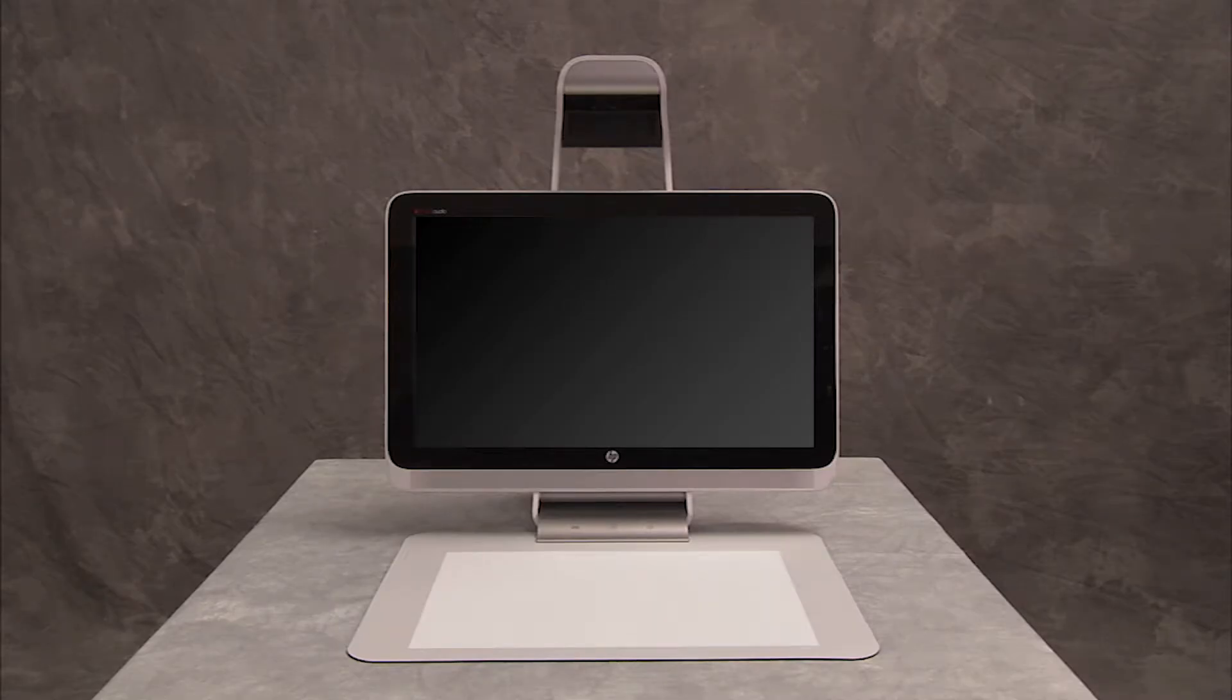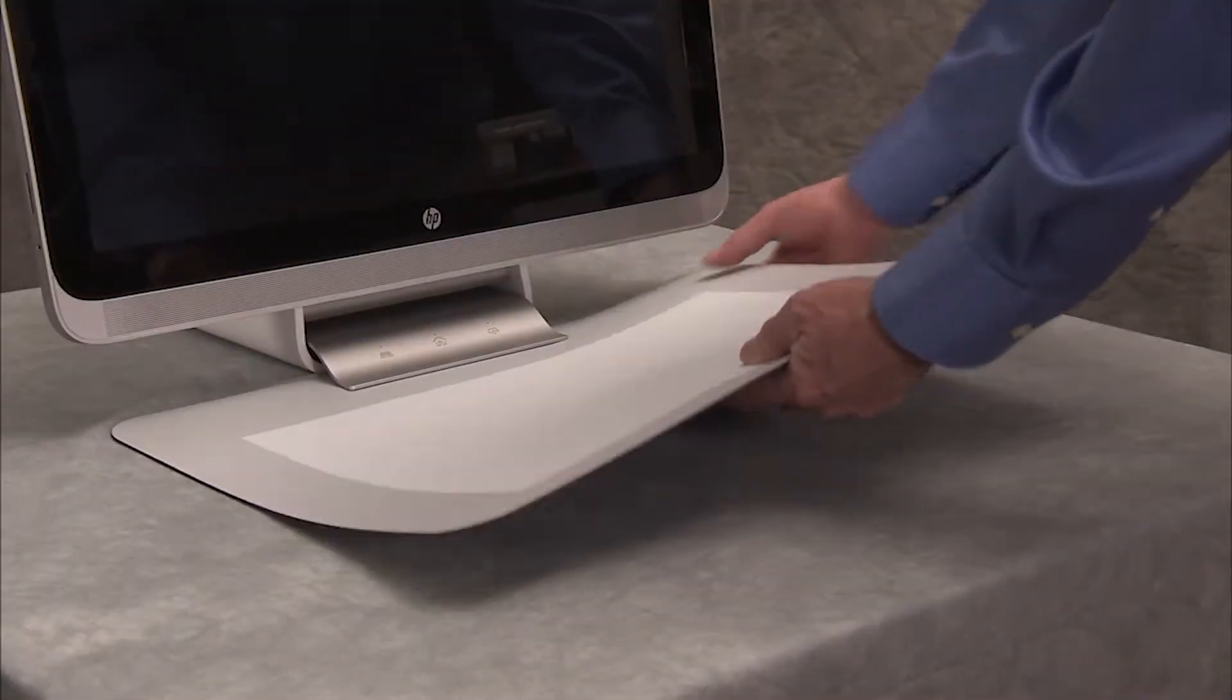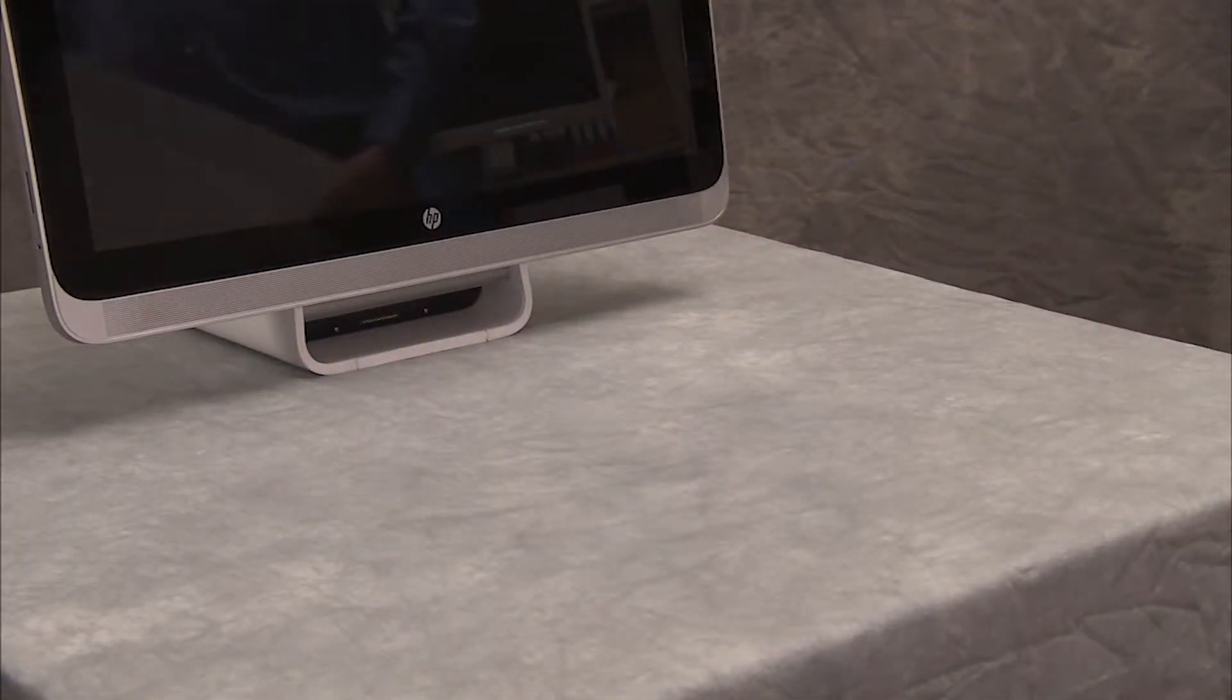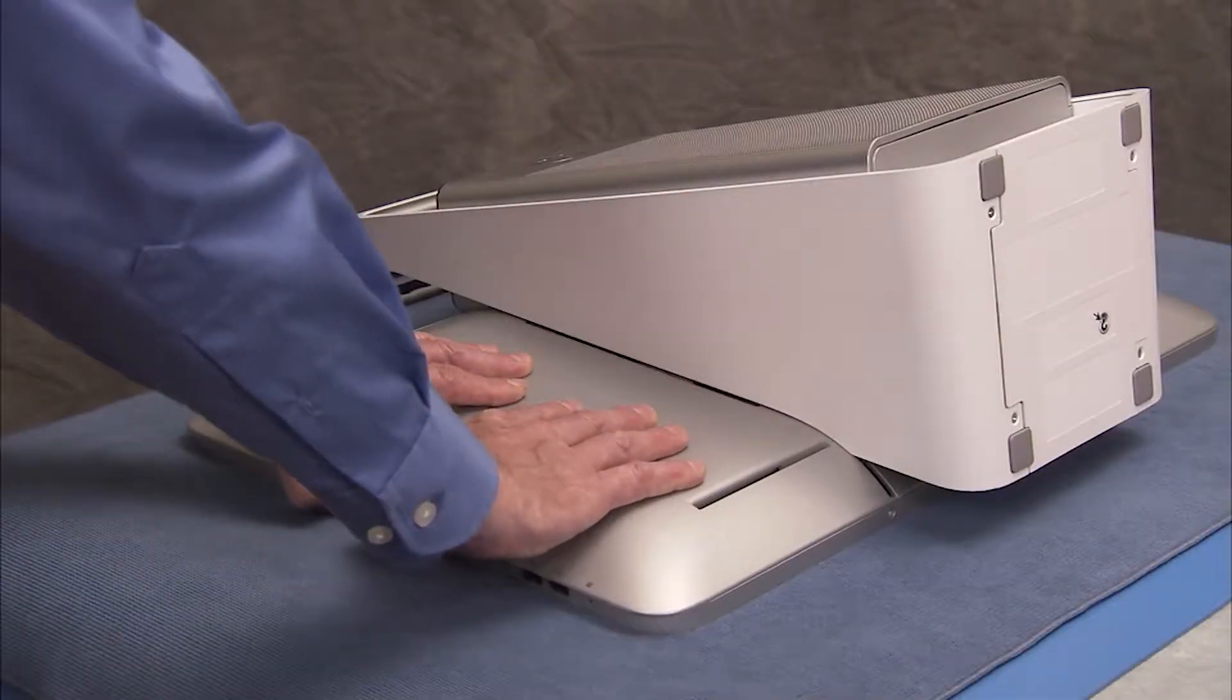To remove or replace the power button board, first remove the touch mat and the right rear cover.